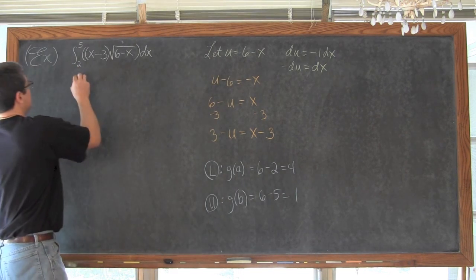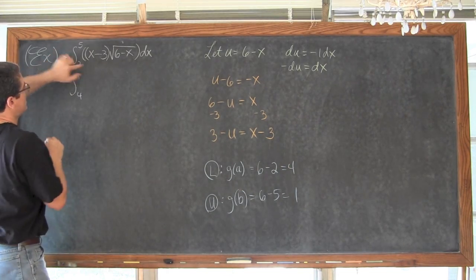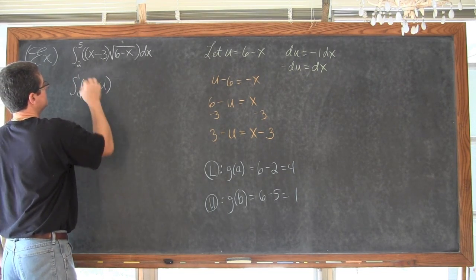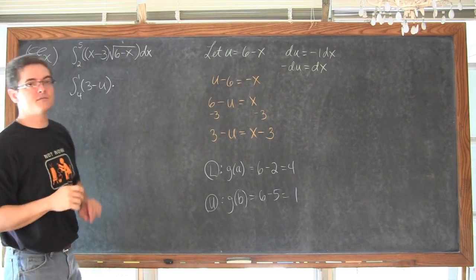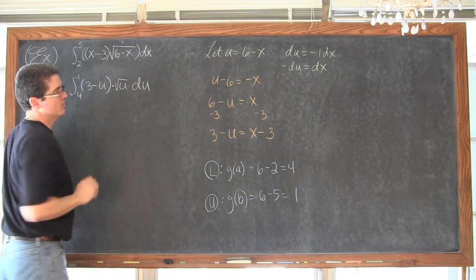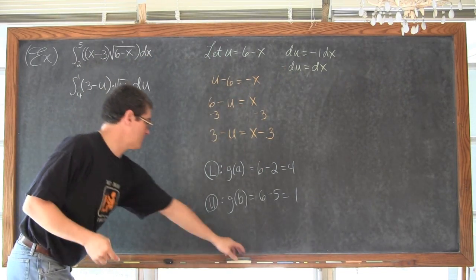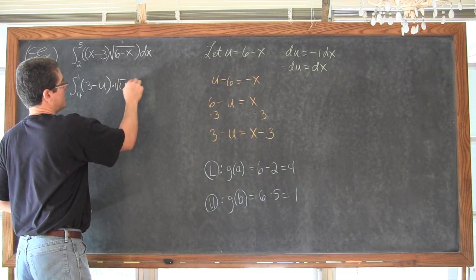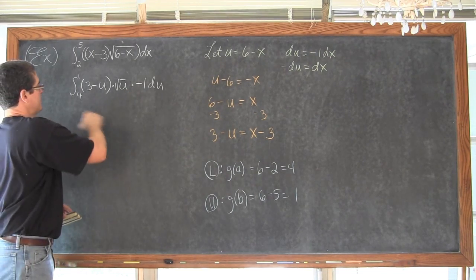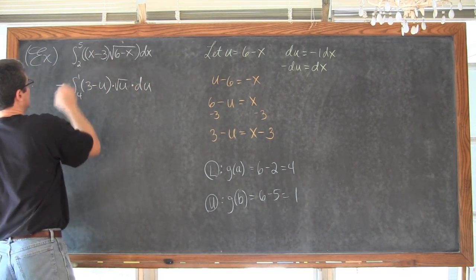We have enough information. Let's get this substitution done. We have the definite integral from 4 to 1. x minus 3 becomes 3 minus u. The square root of 6 minus x becomes the square root of u. And dx was equal to negative du, so we multiply by negative 1 times du. We move that negative 1 out in front of the definite integral — because you can pull out those constants — giving us negative times the integral from 4 to 1 of (3 minus u) times the square root of u du.